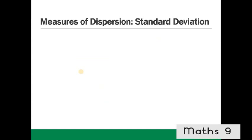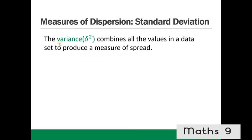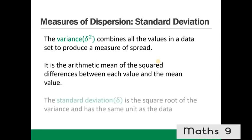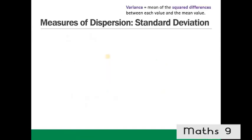Standard deviation is another way of measuring dispersion. The variance (δ²) is the arithmetic mean of the squared differences between each value and the mean value. We square the differences to ensure they are all positive so they don't cancel each other out, then find their arithmetic mean. The standard deviation is the square root of the variance, which cancels out the earlier squaring.